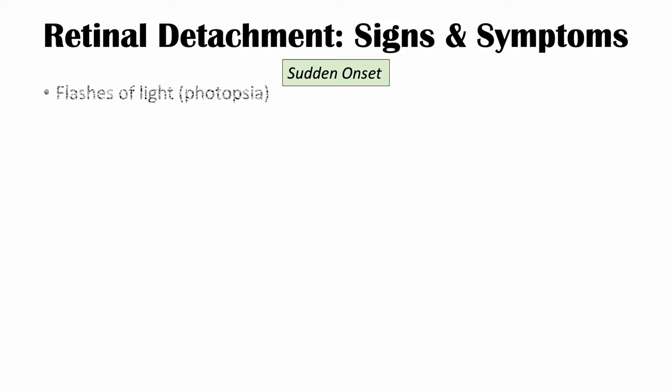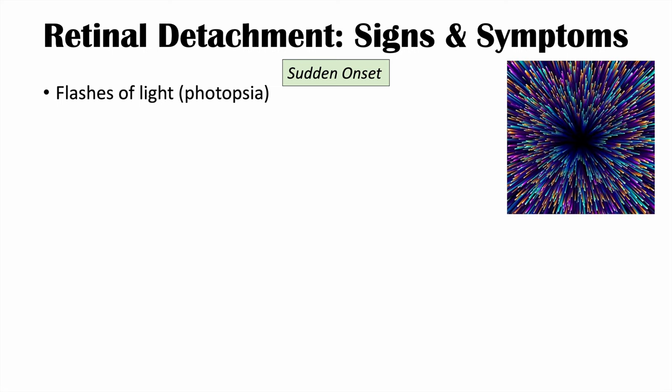The signs and symptoms of retinal detachment are often sudden in onset. Symptoms include flashes of light, or photopsia — as the retina is pulled away, those cells are activated, producing light sensations. Floaters are also common, especially in regmatogenous detachment, where pieces of the retina float in the vitreous humor. Patients will have a sudden onset of many floaters and flashes of light.